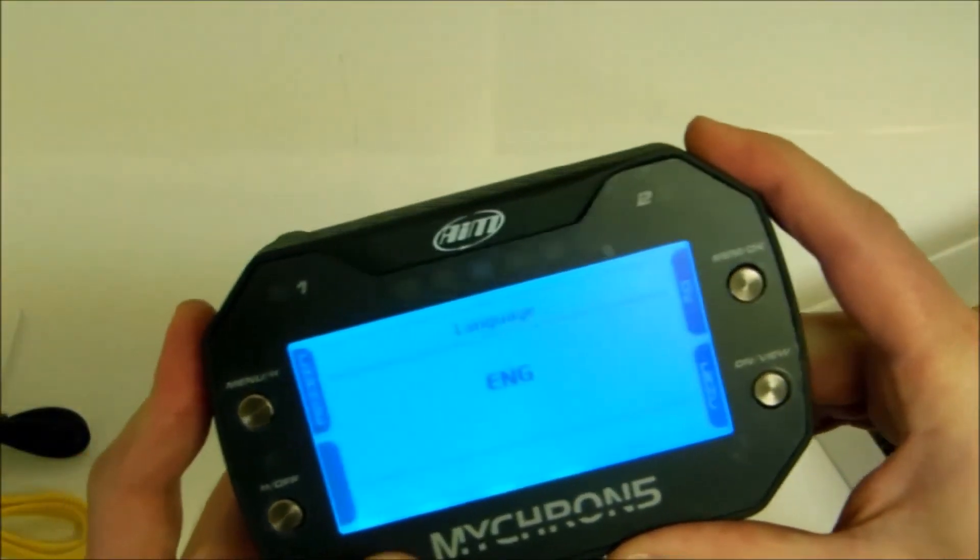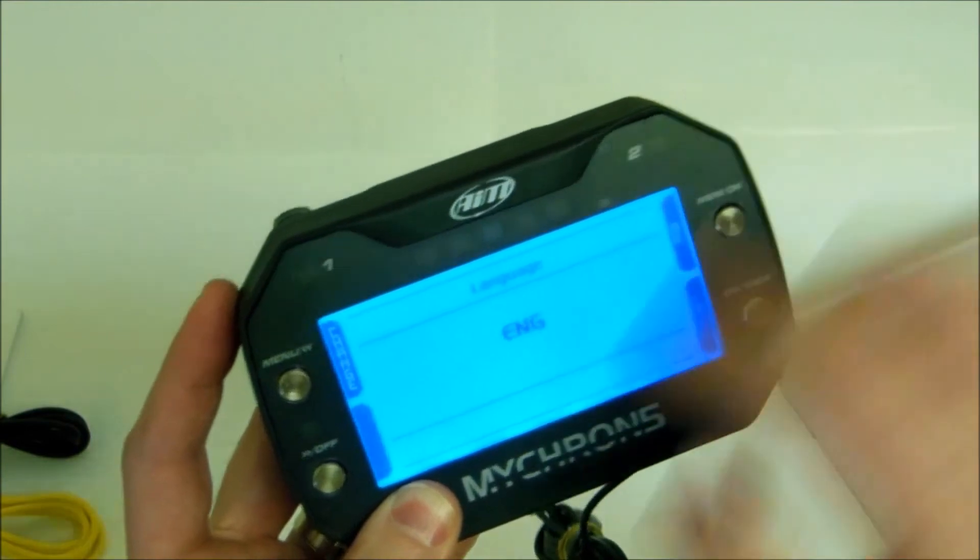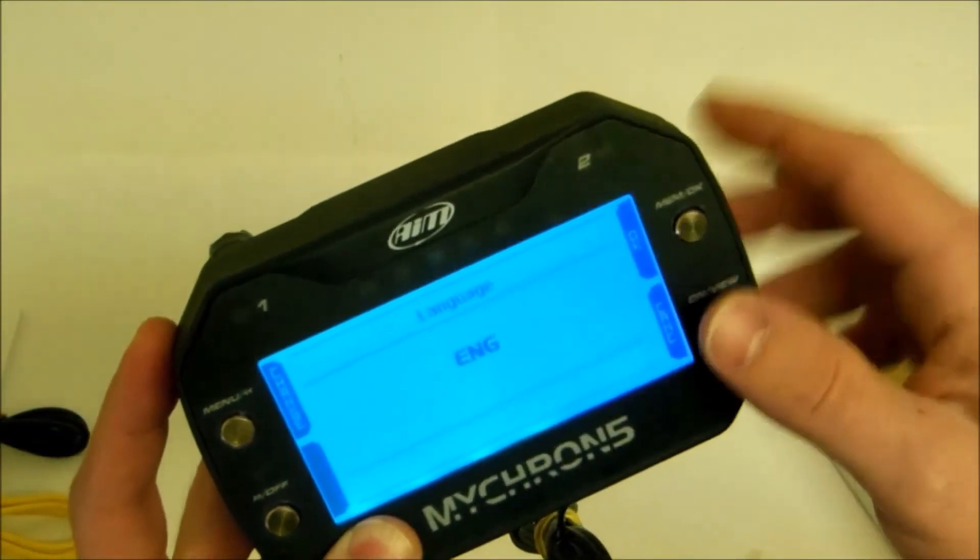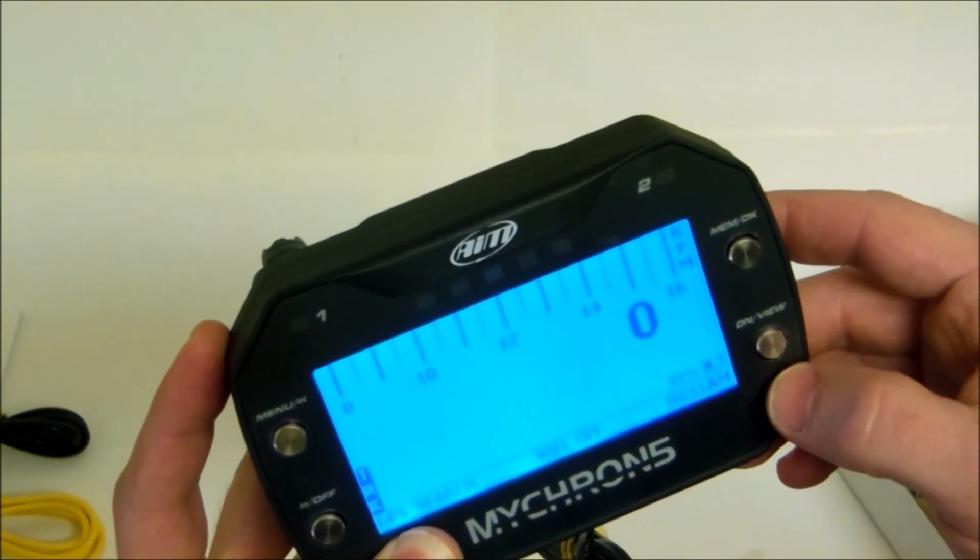Here is the device powered on. As you can see it has a nice clear screen. The backlight is a color blue. The on and off button and a couple of menu buttons to choose from.